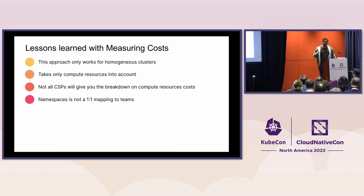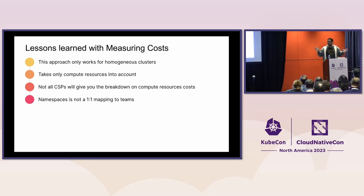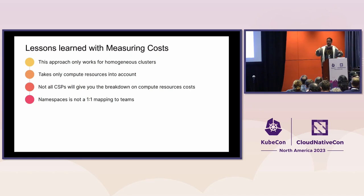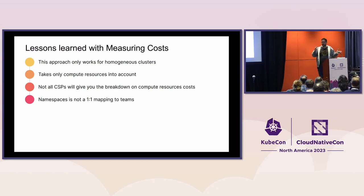You might have noticed all my examples used AWS for billing but I pulled numbers from GCP. Not all cloud providers give you an actual breakdown of CPU versus memory. If your cloud provider just gives you the total cost of an instance, a rough split is about 80% for CPU and 20% for memory — you can use that math to figure it out.